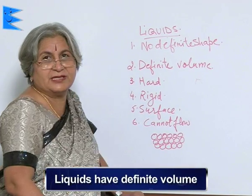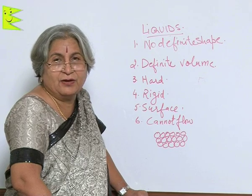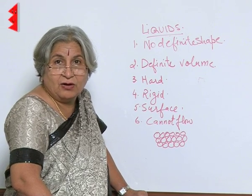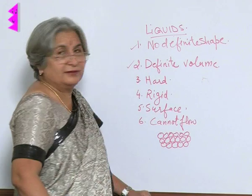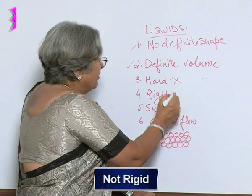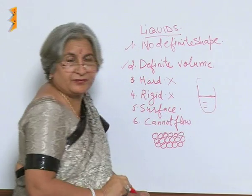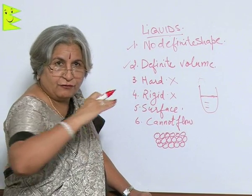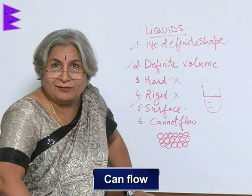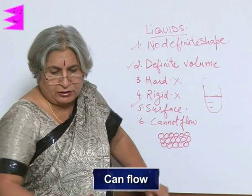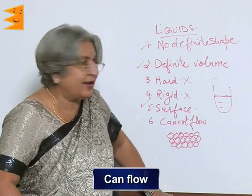However, liquids do have a definite volume. When the milk is one liter, whether it is in a polypack, a pan, a glass, a tumbler, or a katori, it will remain one liter only. So the volume is definite. Liquids are not hard or rigid, but they have a surface — meaning the molecules are close enough to form a regular covering. And liquids can flow; had I poured milk here it would have reached there because it can flow.